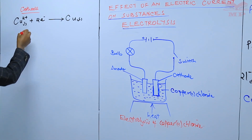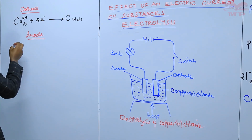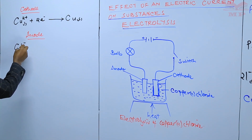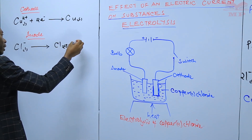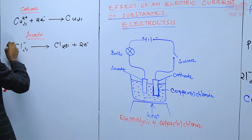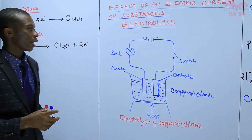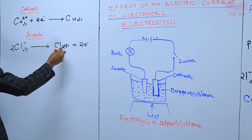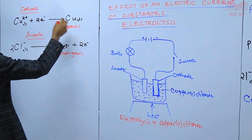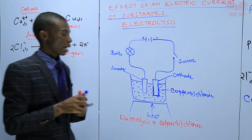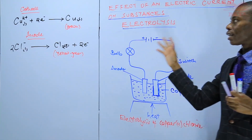At the anode, we expect chloride ions which are in liquid state to lose electrons, and chlorine gas will be produced. A yellow-green gas will be observed at the anode because chlorine is yellow-green. That is what is observed at both the anode and the cathode, and those are the equations for the reactions at both the anode and the cathode.